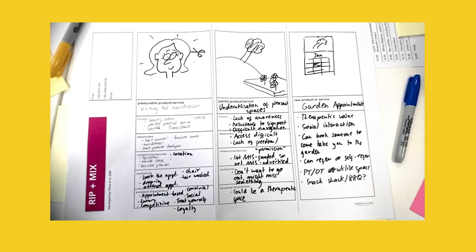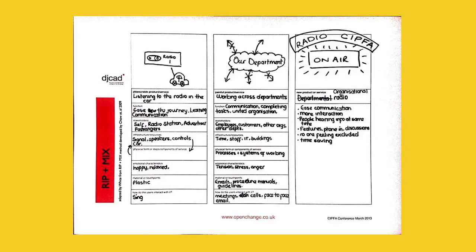In this example, the pleasurable service was visiting the hairdresser, while the pain point was the underutilisation of pleasant spaces. This led to the concept of new garden appointments. And here, the pleasure card was about listening to the radio in the car, mixed with the problems of cross-departmental working, resulting in an organisational radio station to improve communication and interaction.